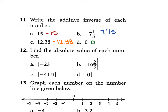For 12, we're finding the absolute value of each number. Remember, the only thing you're doing is taking the positive of the number inside. If the number inside is already positive, it stays positive — just get rid of the absolute value bars. For 12a, the absolute value of negative 23 is positive 23. For b, the absolute value of 16 and 2/3 is just 16 and 2/3. For c, the absolute value of negative 41.9 is positive 41.9. And d, the absolute value of 0 is just 0.